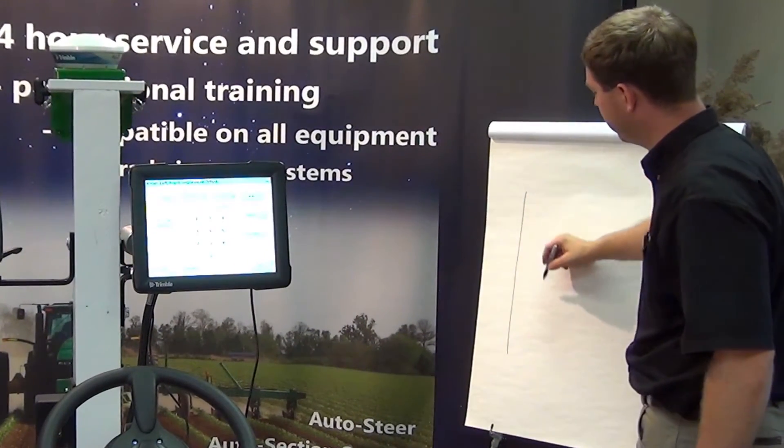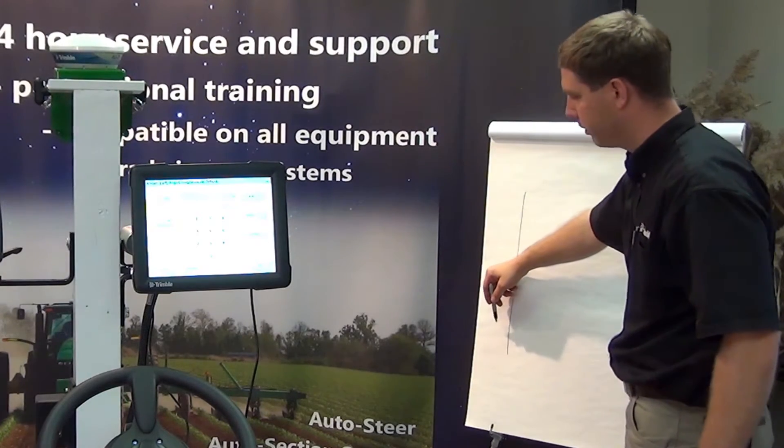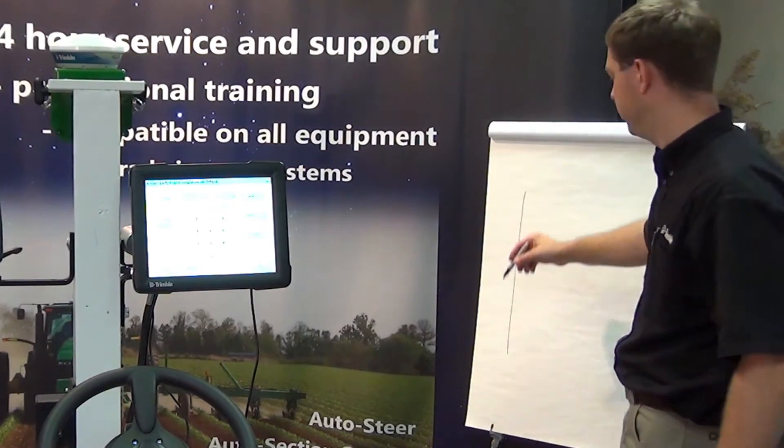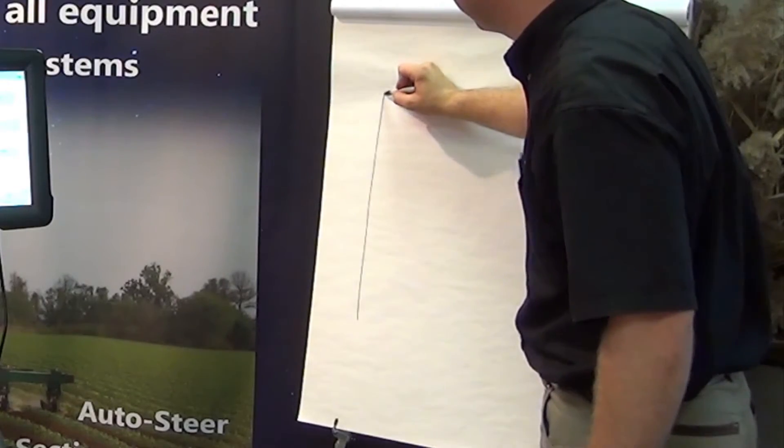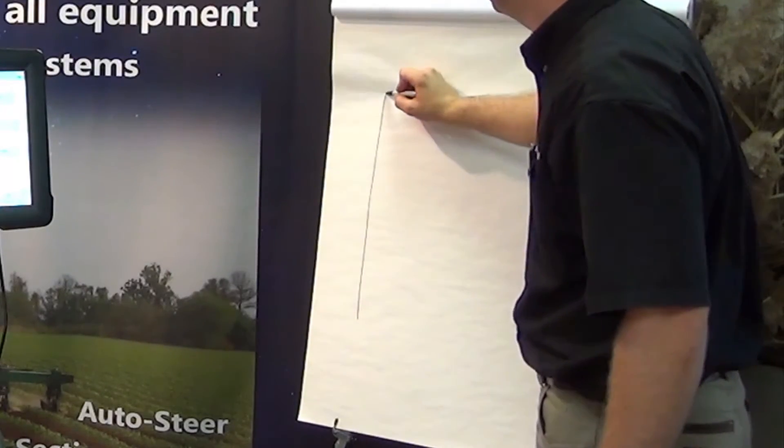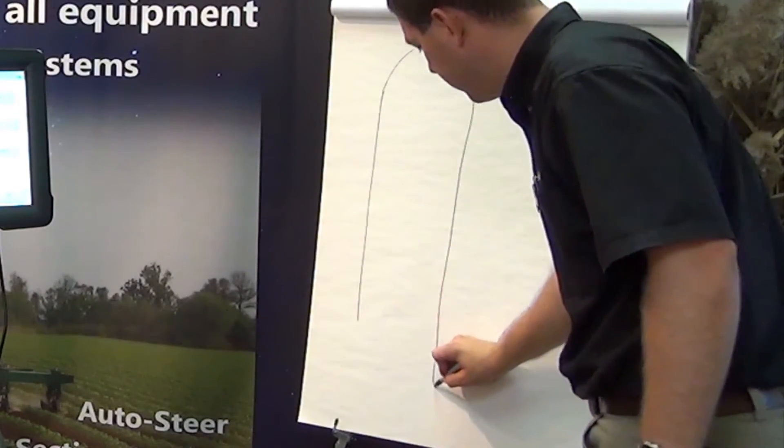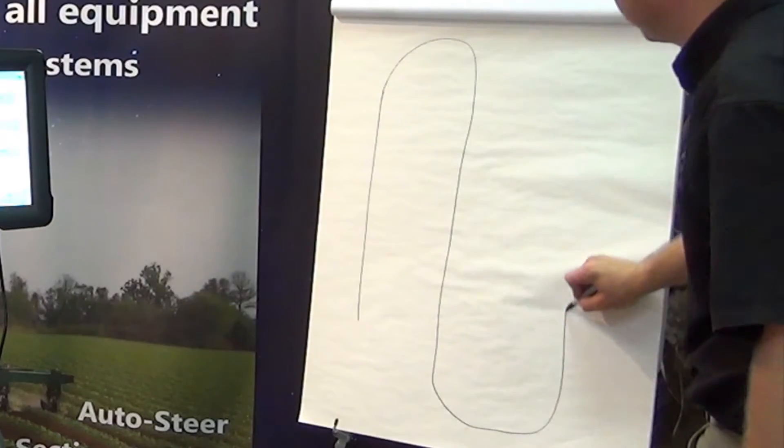I usually recommend dropping the planter in the ground for 15 feet or so, strip till bar, whatever you're doing. Drop it in the ground for about 15 feet. Come right back around so that way we know we have no GPS drift, and we're going to turn around again.